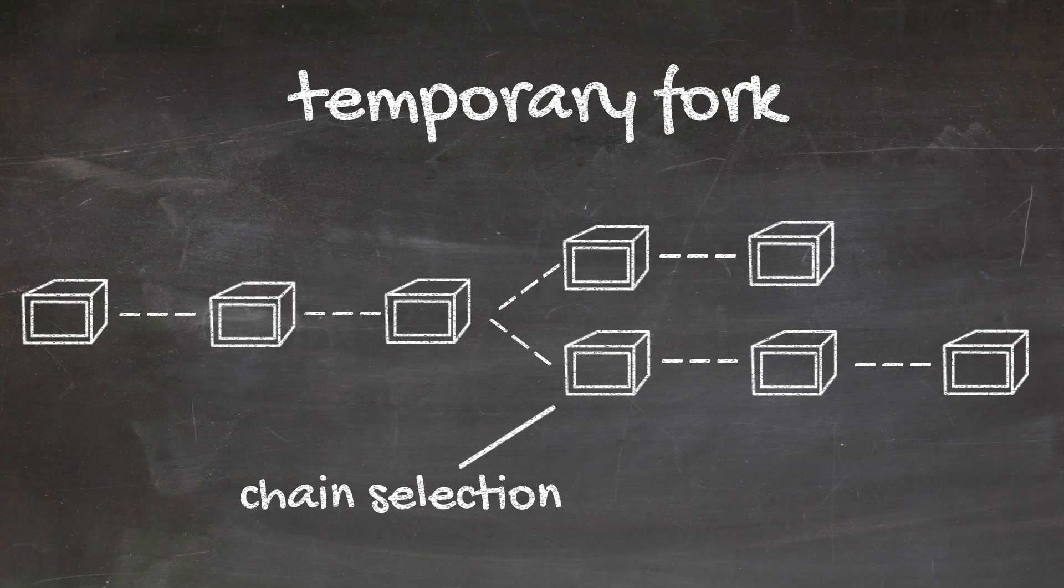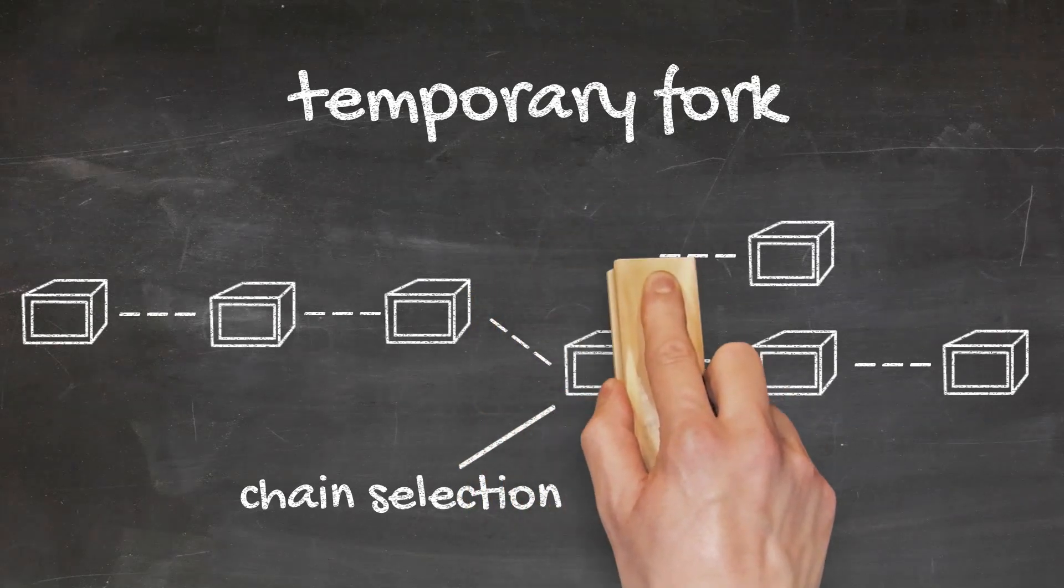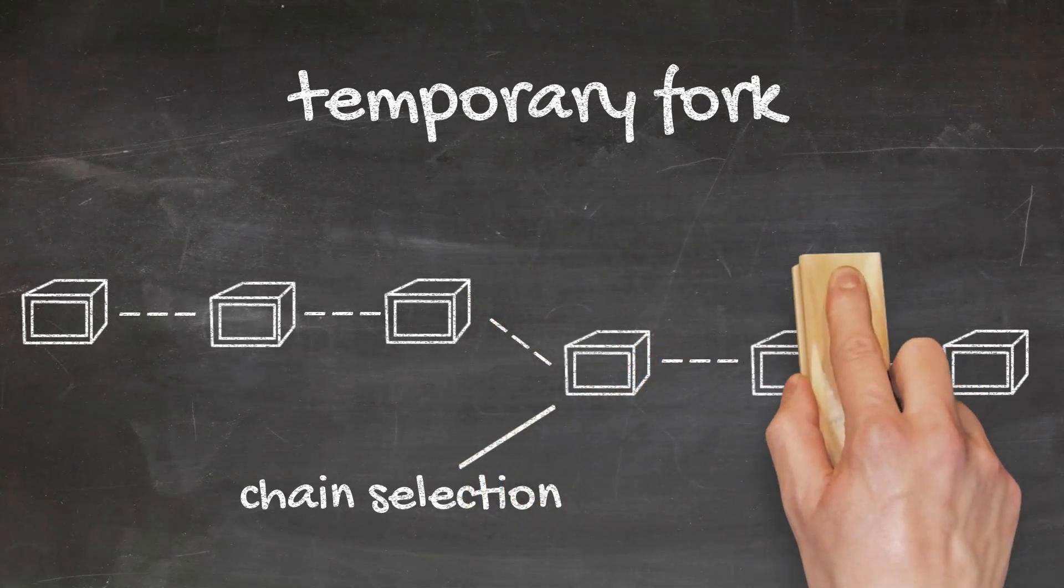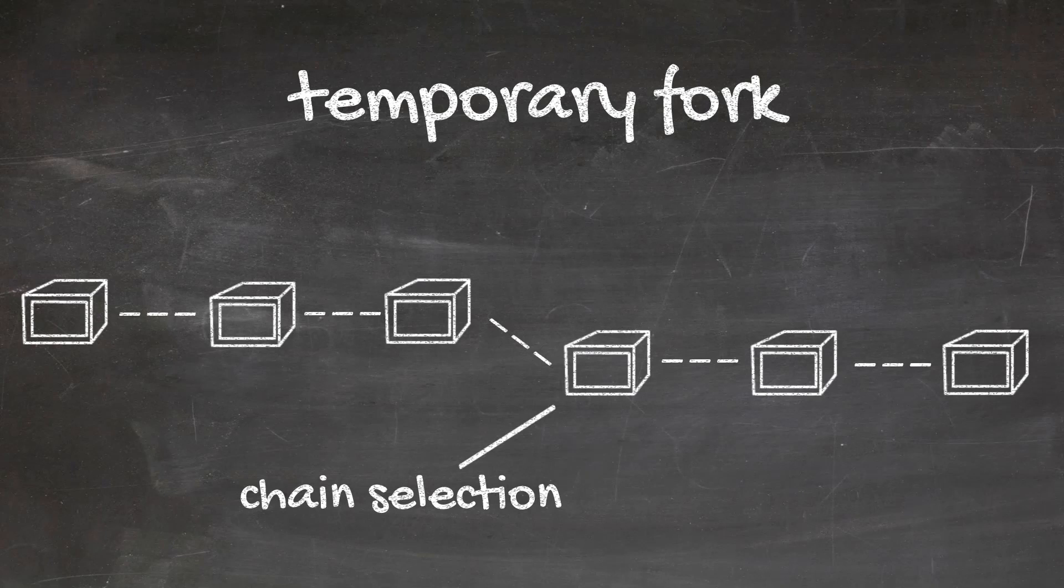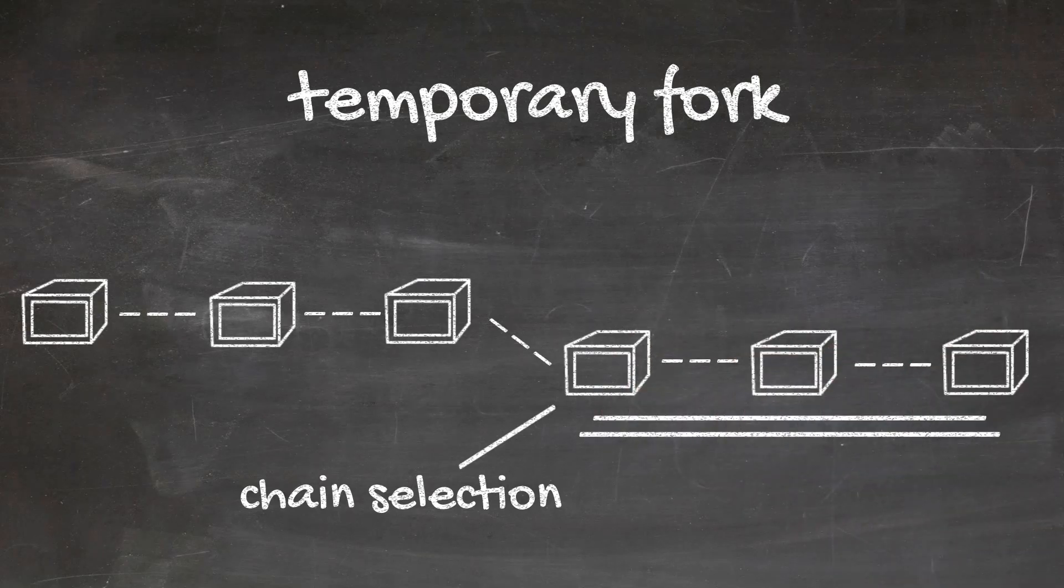Cardano resolves such forks by a somewhat similar rule. Without going into too much detail, the network selects the most dense chain, which is not necessarily the longest one. The important thing to note here is that, if you are the one that creates the majority of blocks, it is likely that you can create the longest or the most dense chain, and therefore get selected by the rule.